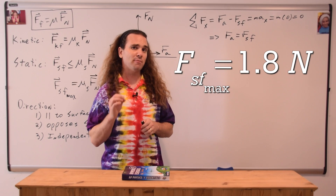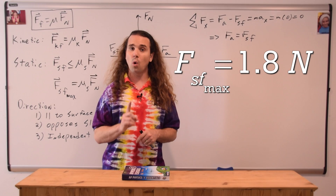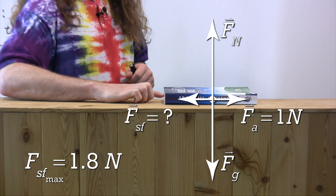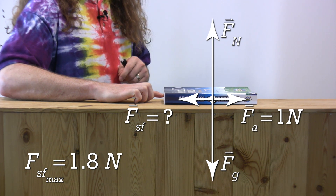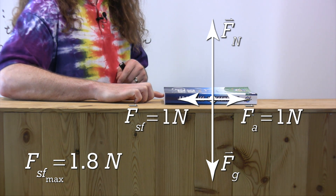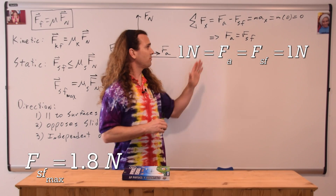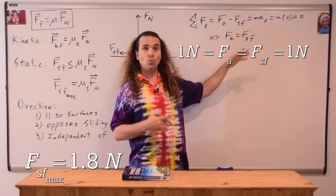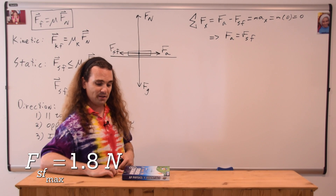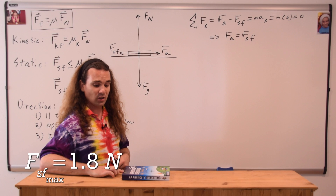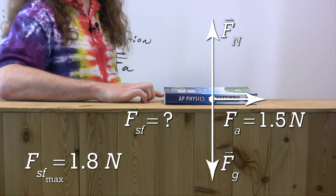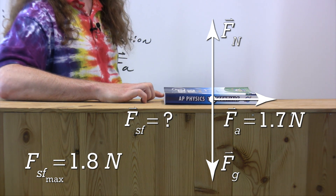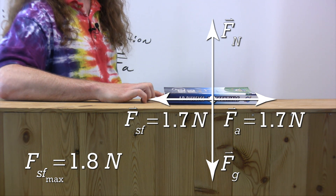Assume the maximum force of static friction between the book and the table is 1.8 newtons. If a force of 1 newton is applied, the force of static friction is 1 newton. If the applied force increases to 1.5 newtons, the static friction is 1.5 newtons. If it increases to 1.7 newtons, the static friction is 1.7 newtons — still below the maximum.